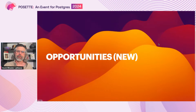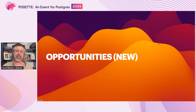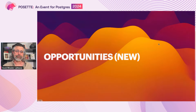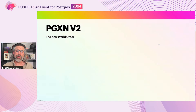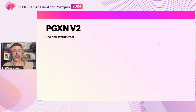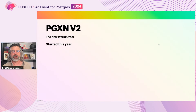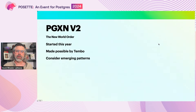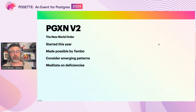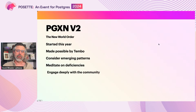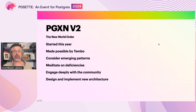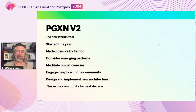Which brings us to the future. What new opportunities are there to improve the extension ecosystem for developers and for users? To answer those questions, we've launched a project codenamed PGXN v2 to find out and make it happen. This came about thanks to Tembo, the creators of Trunk, who hired me specifically to consider emerging patterns like binary registries and development frameworks, to meditate on the deficiencies including discovery and ease of installation, and to engage deeply with the broader community of Postgres developers, extension authors, and users, in order to understand the use cases well enough to design and implement a new architecture that will serve the community for the next decade or more.